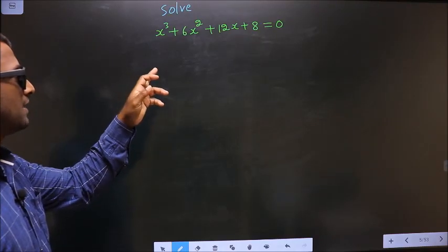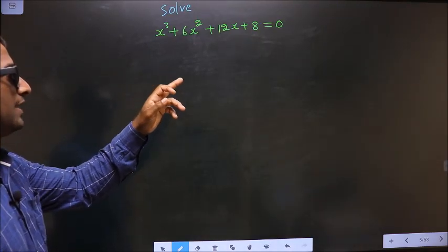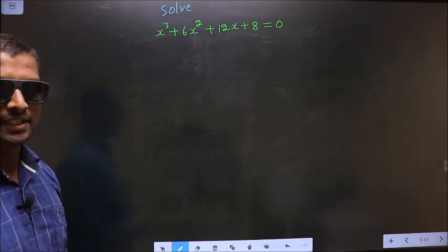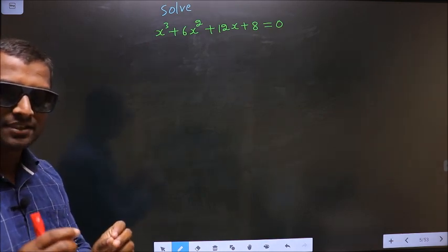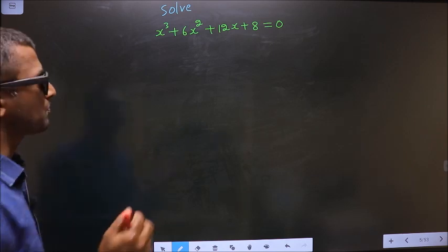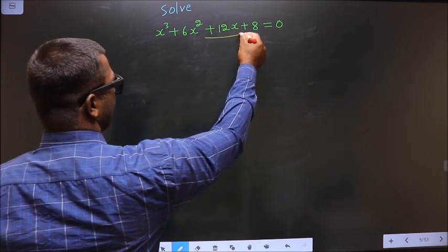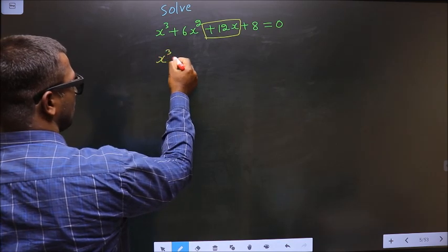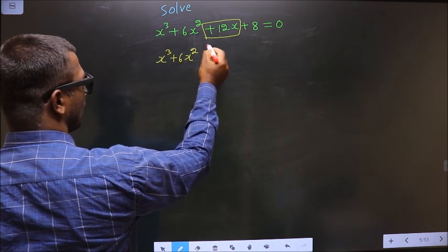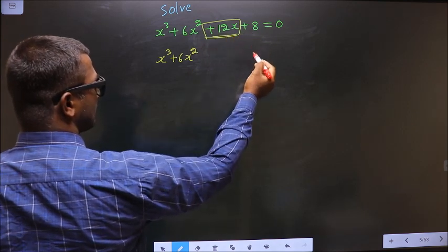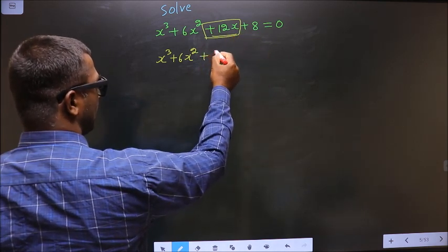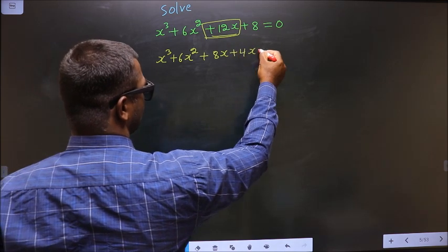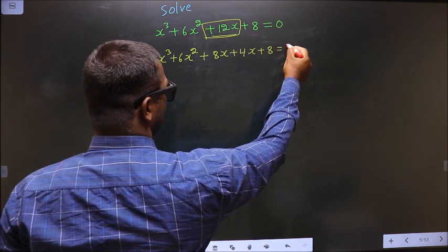Solve x cube plus 6x square plus 12x plus 8 equal to 0. To solve this, we should change the x term, that is plus 12x. So x cube plus 6x square — in place of plus 12x, I will be writing plus 8x plus 4x, plus 8, equal to 0.